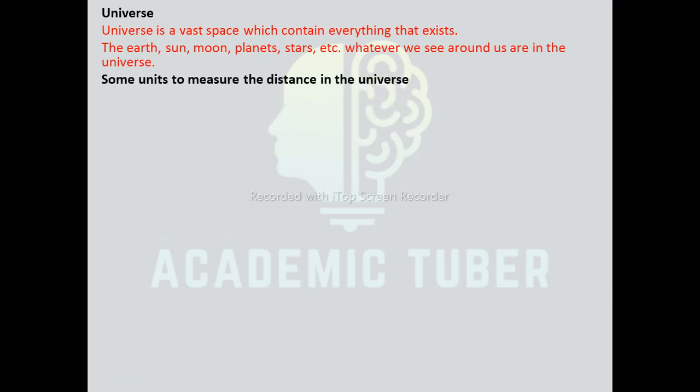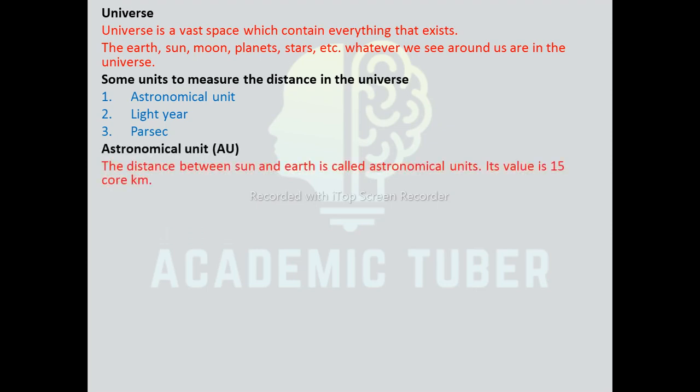Some units are used to measure the distance in the universe. Since one body is very far from another body in the universe, the distance between them cannot be measured in kilometers or miles. Bigger units like the light year, astronomical unit, parsec, etc. are used. The astronomical unit is the distance between the Sun and the Earth, and its value is 15 crore kilometers.